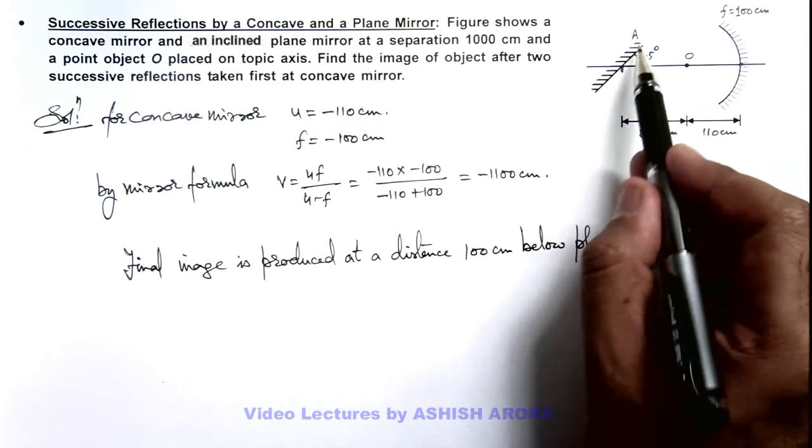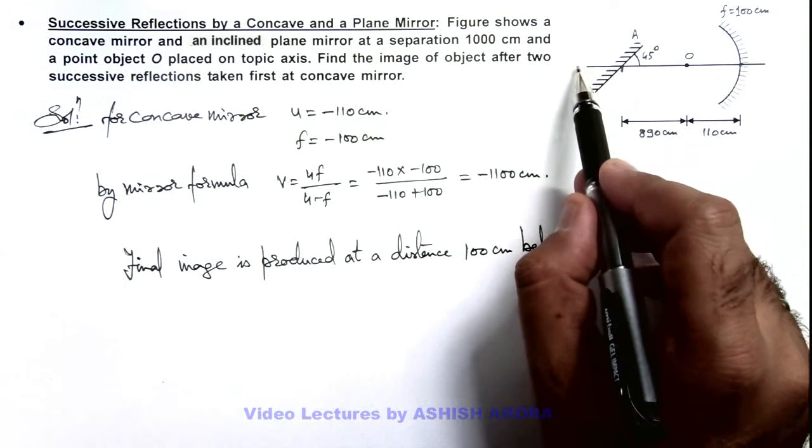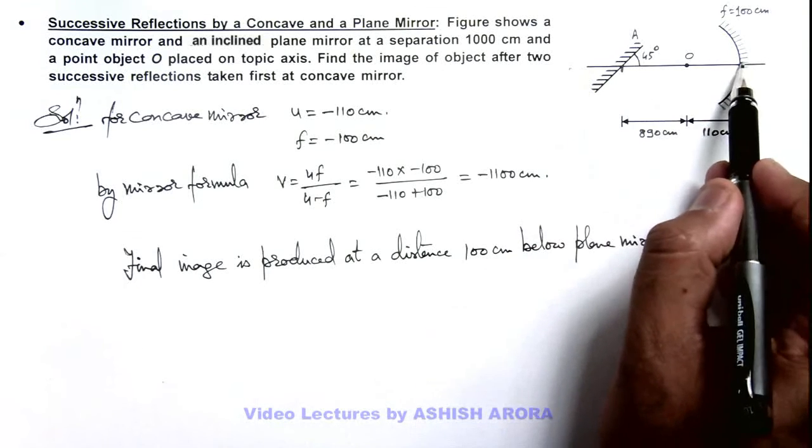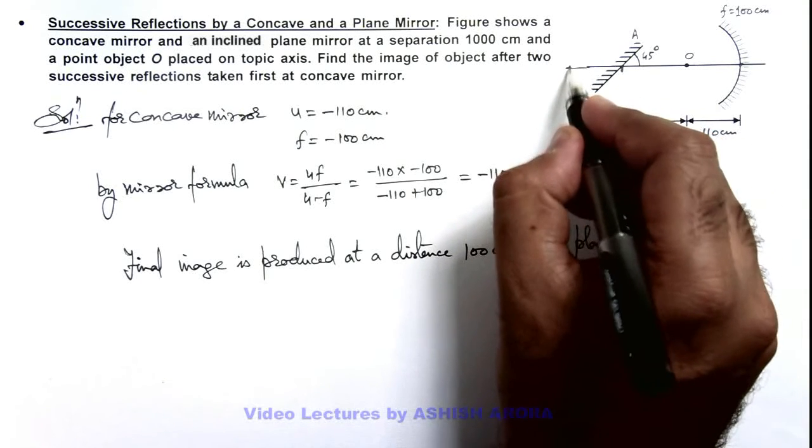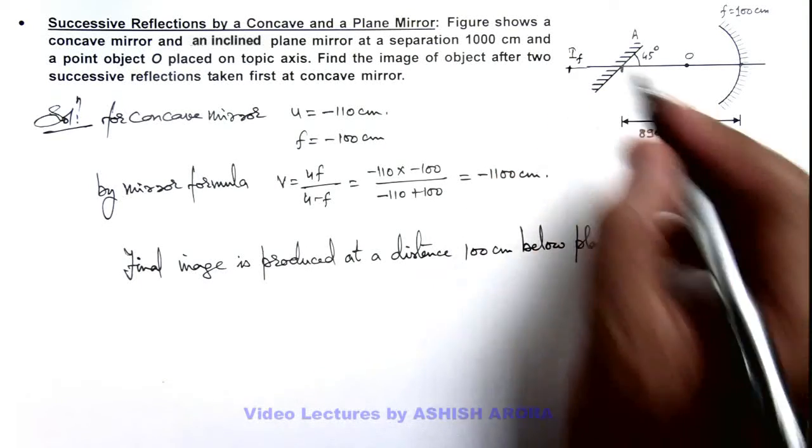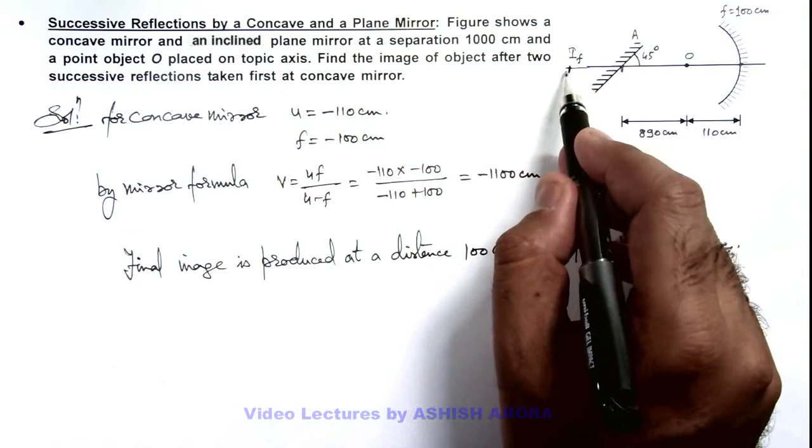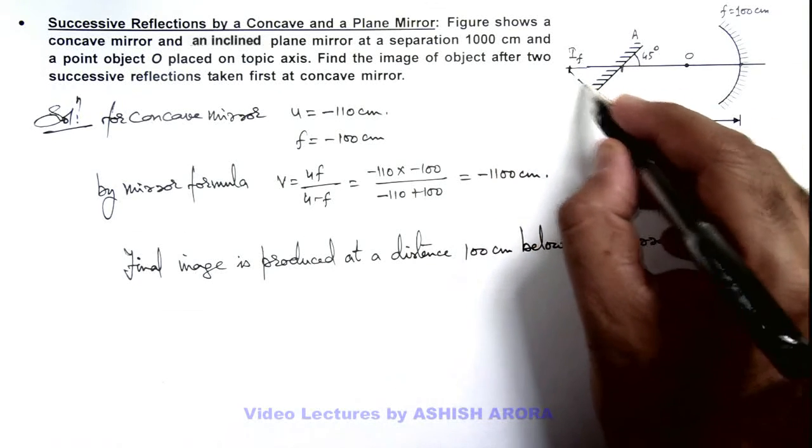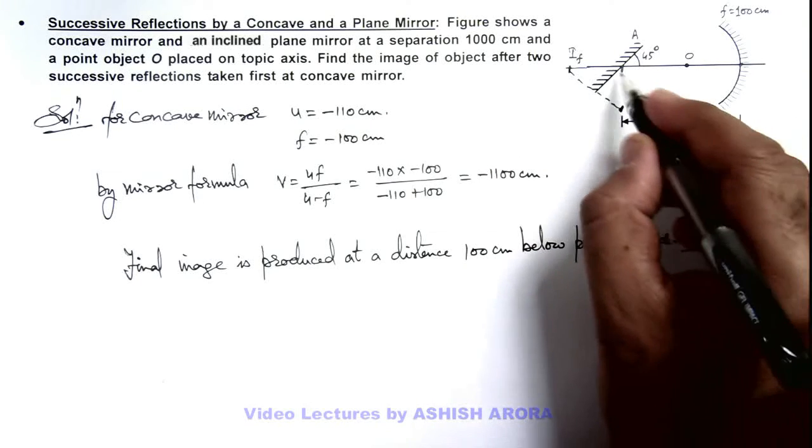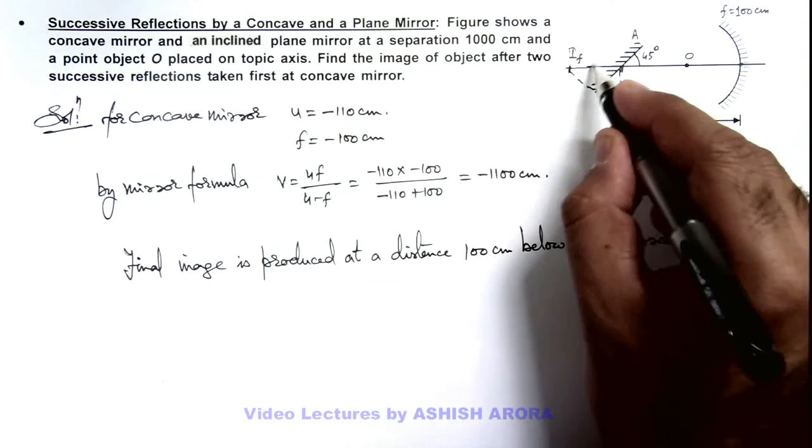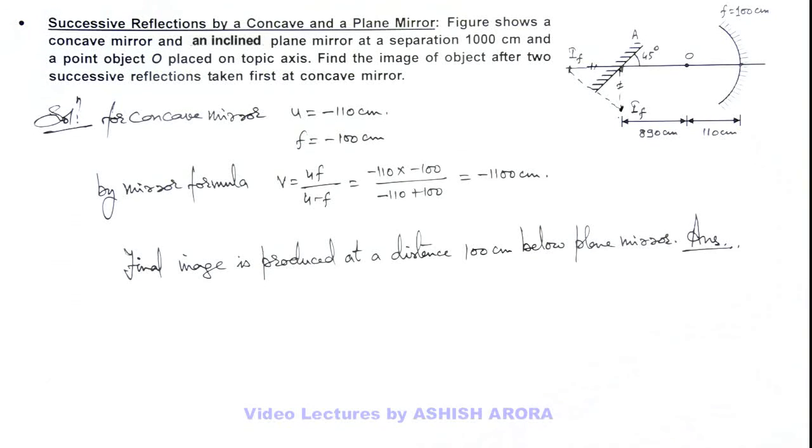Because if this mirror is not present then image is produced at eleven hundred centimeter from this mirror, that is hundred centimeter behind this plane mirror. So if the mirror is placed, this image will act as an object for this mirror, and the final image is produced over here. This is the actual final image which is at a distance hundred centimeter below this optic axis due to this plane mirror.